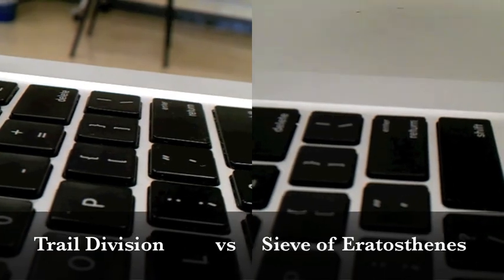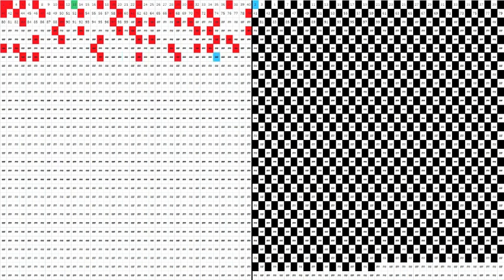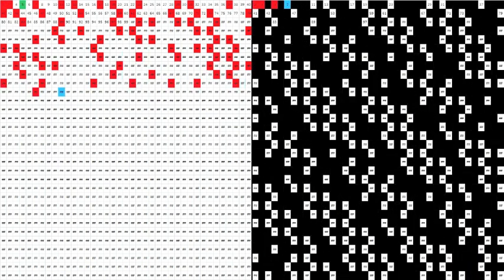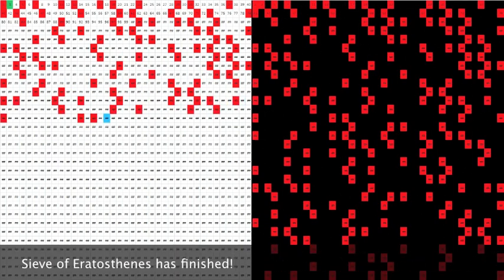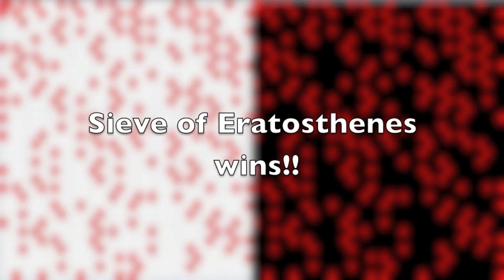In this test, the upper limit of the range is about 1,231. As you can see, the sieve found all prime numbers even before trial division hit the halfway mark. From this, we conclude that the sieve is much faster than trial division.